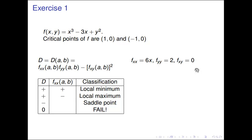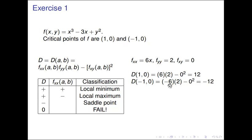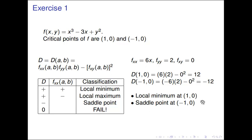Now we compute d at each critical point. At (1, 0), x equals 1, so we get 6 times 2 minus 0 squared, which equals 12 — positive. At (-1, 0), the 6 becomes negative 6, giving d equals negative 12 — negative. Since d is negative at (-1, 0), we get a saddle point there. At (1, 0), d is positive, so we check fxx: with x equals 1, fxx is positive, giving us a local min. In total: a local min at (1, 0) and a saddle point at (-1, 0).